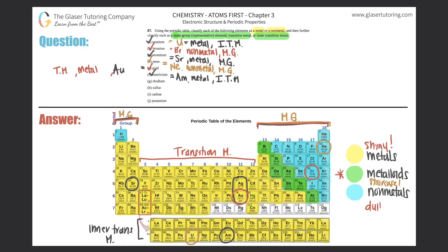Element g: Rhodium. Rhodium's symbol is Rh, and it's element number 45. Rhodium is a metal, and it's in group 9 — within the groups 3 to 12 range — so it's a transition metal.